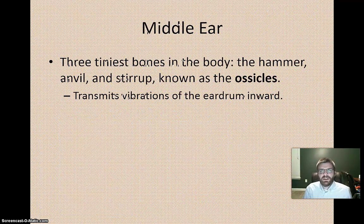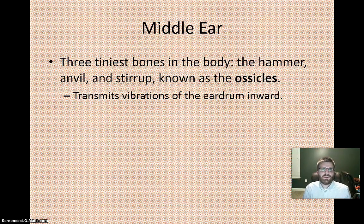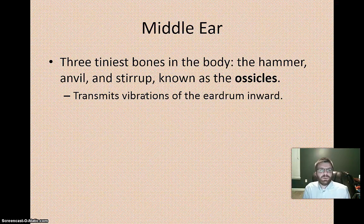The middle ear contains the three tiniest bones in the body, collectively known as the ossicles — similar to 'icicles' but with an O. These three bones are the hammer, the anvil, and the stirrup, and they vibrate to transmit the vibrations of the eardrum inward toward the inner ear.